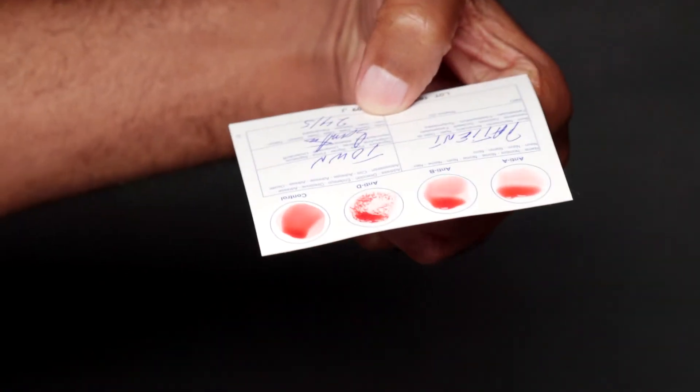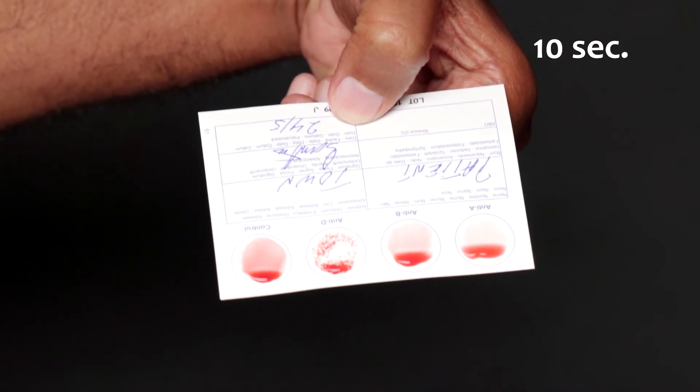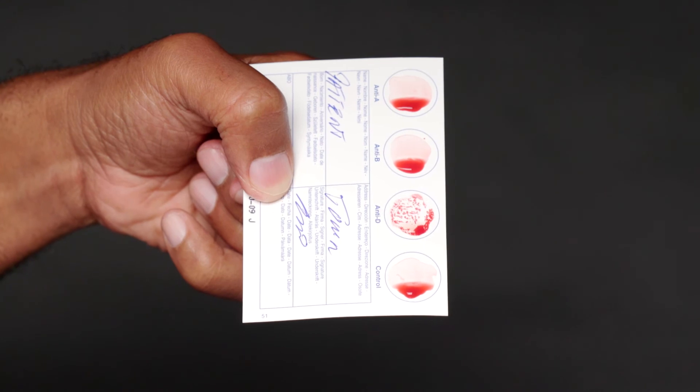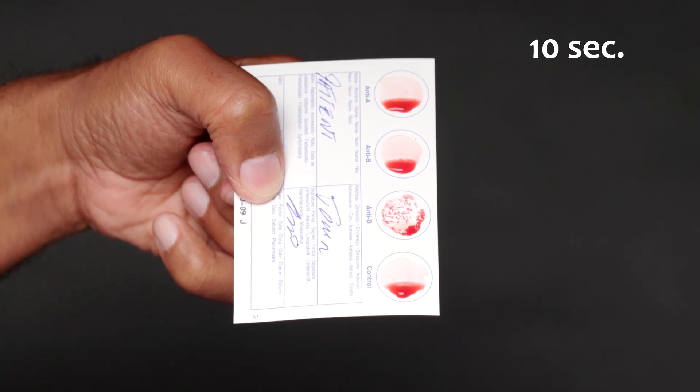The rhesus reaction is often slower than A and B. Don't stop when you see the first reactions.